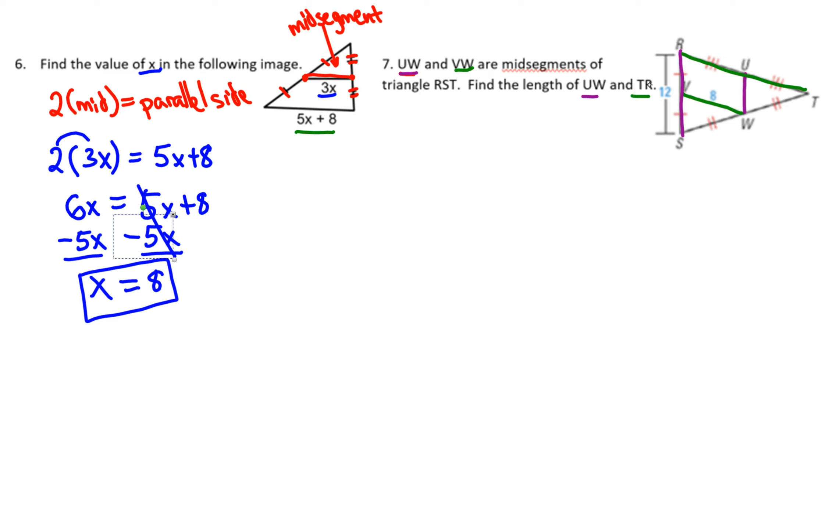UW is what we need to find first, so we'll call that x. The equation is two times the mid-segment equals the parallel side. So 2 times x equals the parallel side, which is 12.